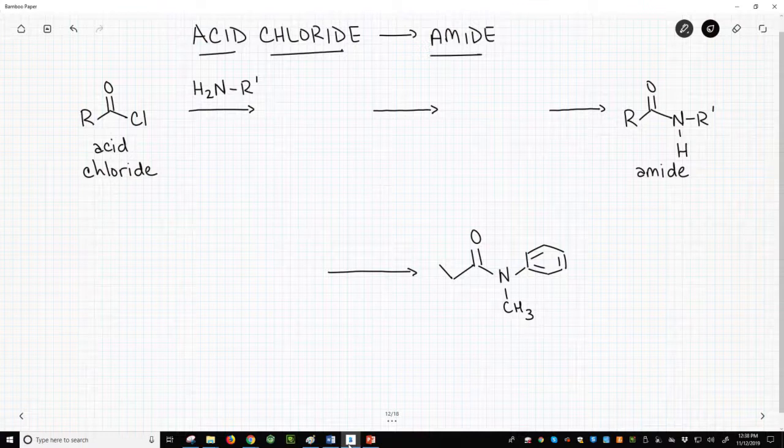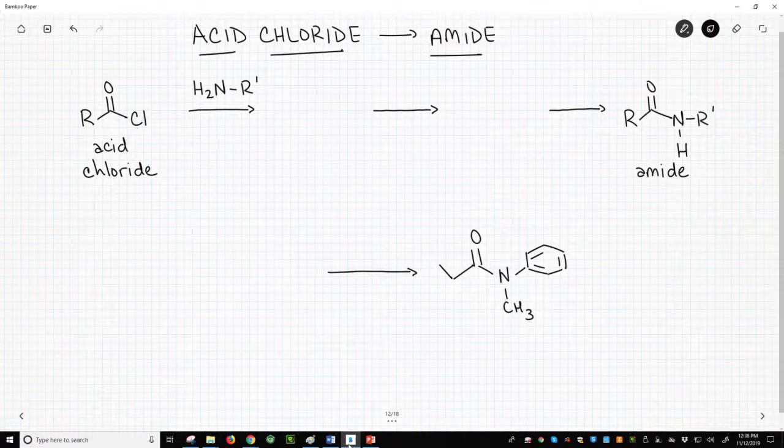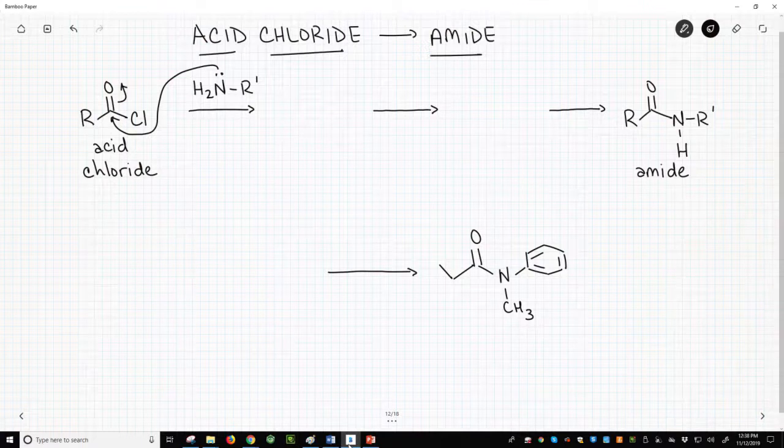They are nucleophilic enough to do an SN2 reaction. They are also nucleophilic enough to attack the carbonyl of an acid chloride. That forms a tetrahedral intermediate.